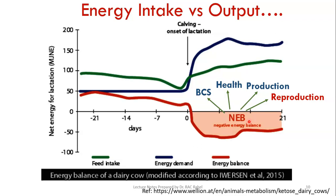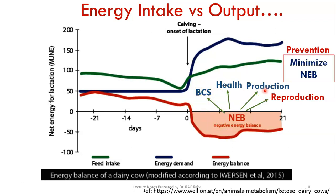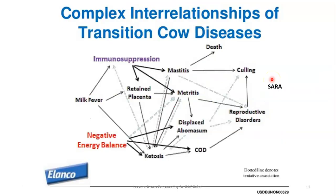If the negative energy balance is not controlled properly, it can affect health, production levels, and reproduction — causing animals to become infertile. We looked at a chart showing its effects on ovulation, fertility, services per conception, and so on. We cannot prevent loss of body condition score entirely, but we can minimize the negative energy balance, and that will determine how minimally these parameters are adversely affected.